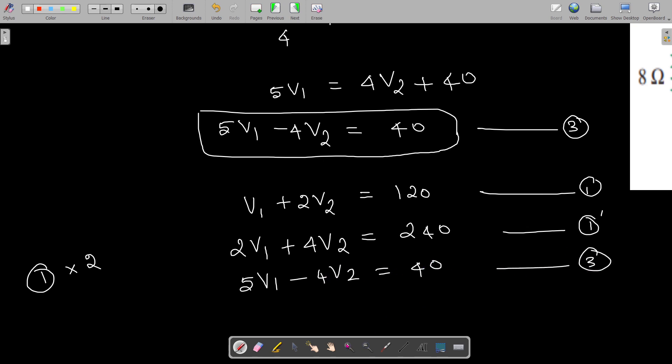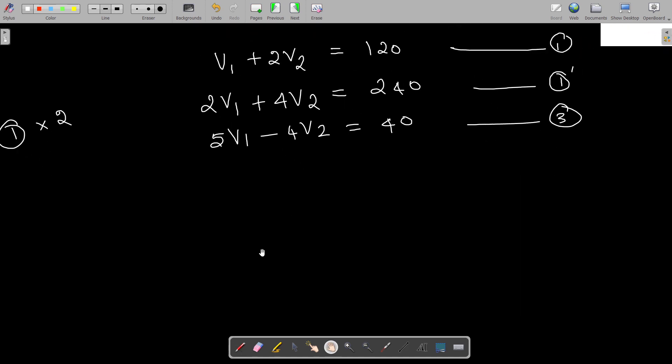When I solve these two equations, equation number one dash and three, by adding these two, 7v1 = 280, so v1 = 280/7 = 40. So the answer is 40 volts for v1.